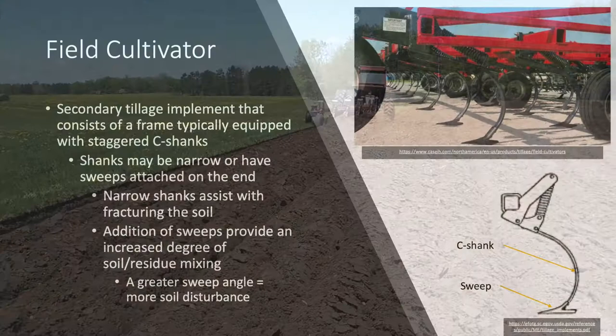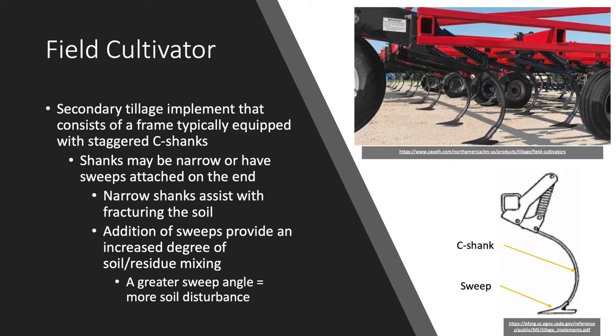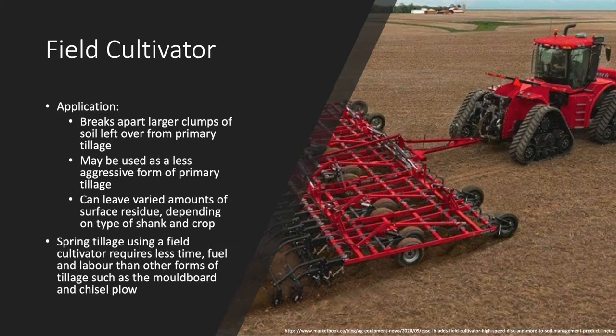Next, we have the field cultivator, which is typically used as a secondary tillage implement that consists of a frame equipped with staggered C-shanks. Some field cultivators may use S-tines, but C-shanks are more common in Ontario. The shanks themselves may be narrow or have sweeps or shovels attached on the ends. Narrow shanks provide a greater degree of soil fracturing, while the addition of sweeps allows for a greater degree of soil mixing and surface material incorporation. Additionally, a greater sweep angle generally allows for a larger volume of soil to be disturbed.